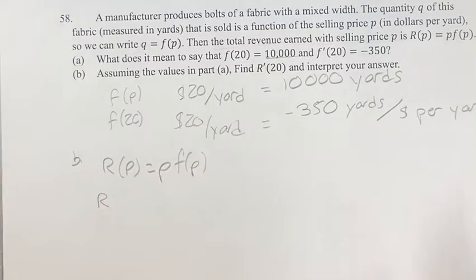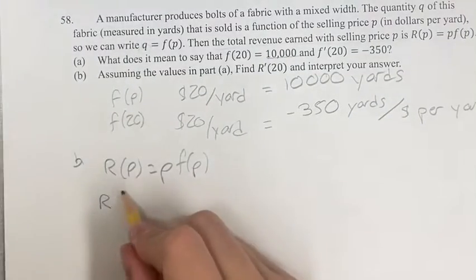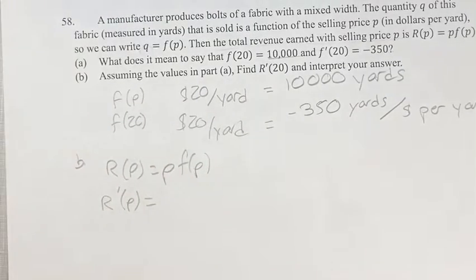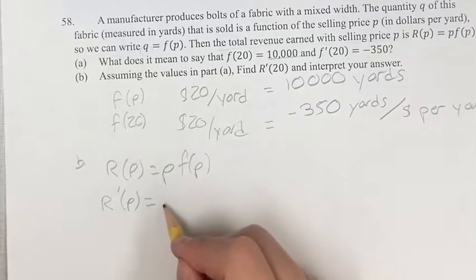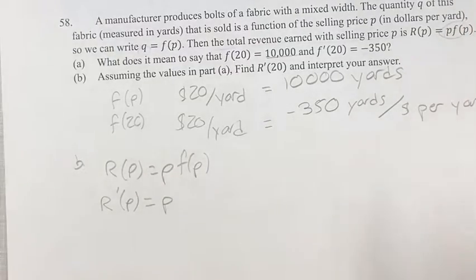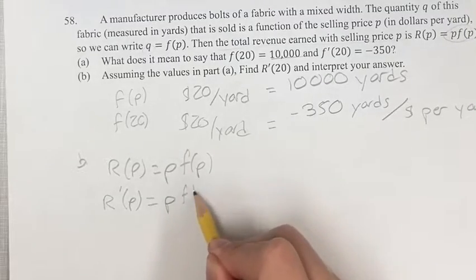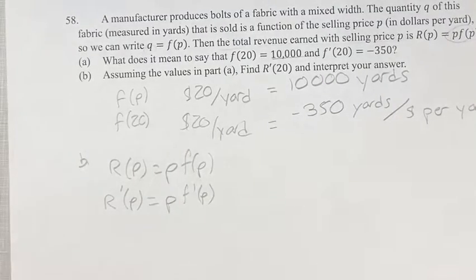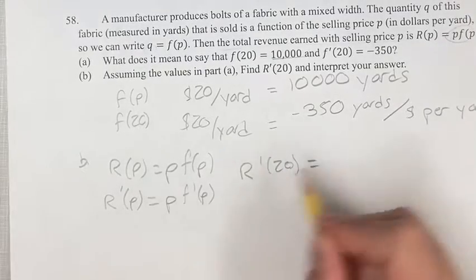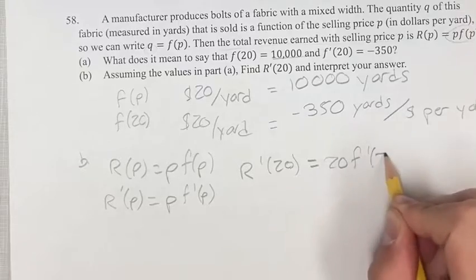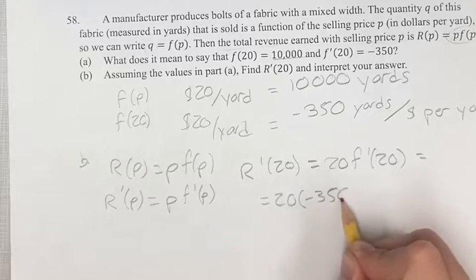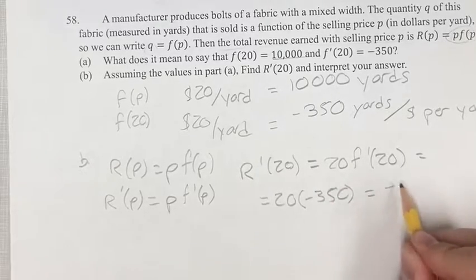So R of P, looking for the derivative, that is going to be P - since P is just a constant, we don't have product rule issues here. It's P times the derivative of F. When we're looking for 20, we have 20 times F prime of 20, which we know is negative 350. 20 times negative 350 is negative 7,000.